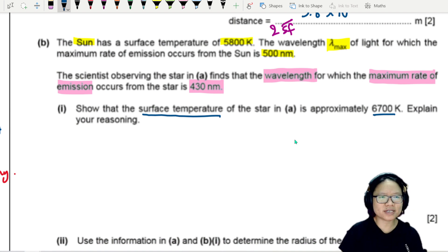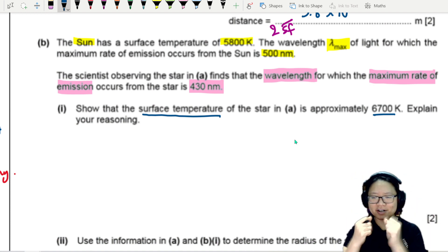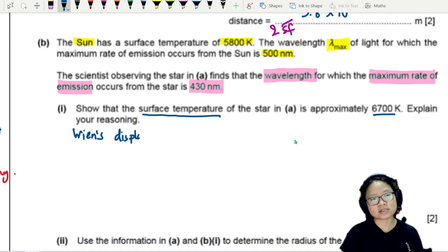Obviously, if I see wavelength and I see temperature, I think of Wien's displacement law. So just name drop, casually name drop, Wien's displacement law, where our λ_max is directly proportional to 1 over T.